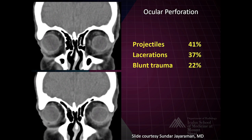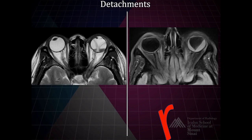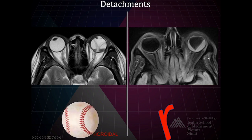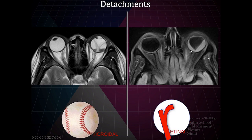Ocular perforation is not called well on CT, but overlapping scleral margins or globe deformity should prompt suggestion of rupture. Detachments come in two varieties: retinal and choroidal. Choroidal detachment does not quite meet the optic nerve head because tethering vessels hold the most medial choroid, producing a pattern resembling a C on a baseball seam. Retinal detachment produces a pointed pattern resembling the tip of an R, meeting at the optic nerve head.